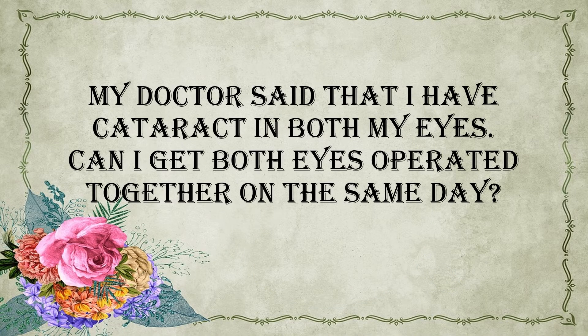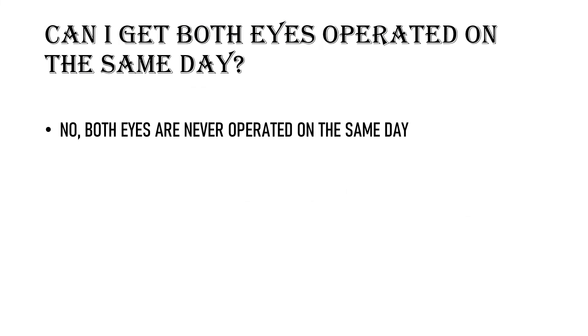If I have cataract in both eyes, can both be operated on the same day? No, both eyes of the patient are never operated on the same day. Ideally, we keep a gap of 4 weeks between the first and second eye surgery. Though in most cases, if the first eye is recovering well, we do operate the second eye within 2 to 3 weeks.